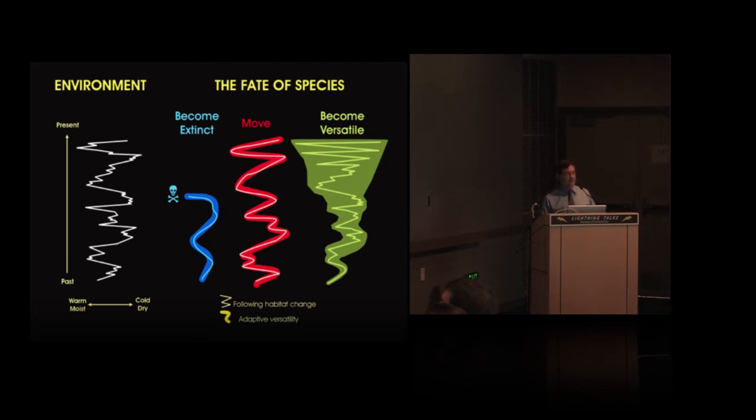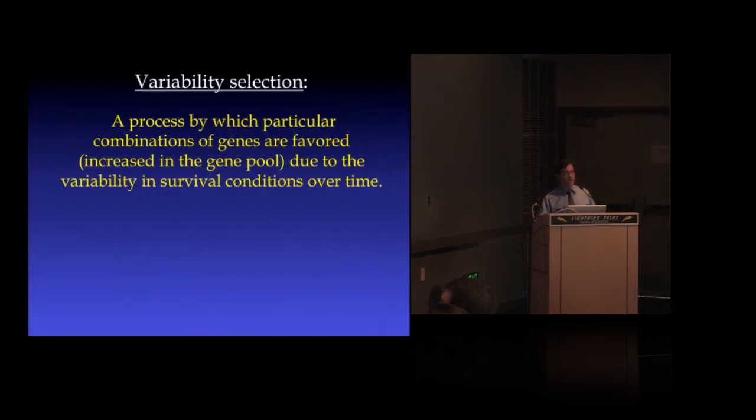In 1996, in a piece I published in Science and a book I published that year, I coined the term for such a process: variability selection. It's a kind of filtering process that with an increase in the instability of environments or the variability in survival conditions...